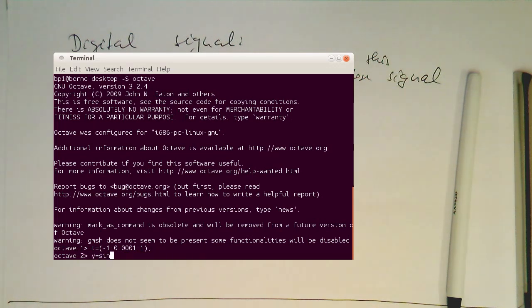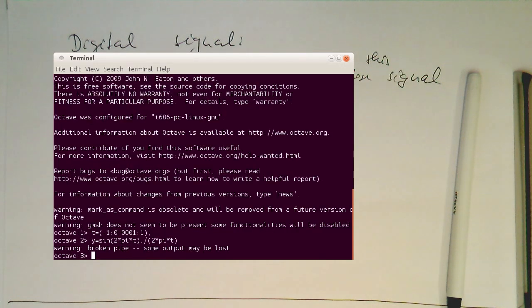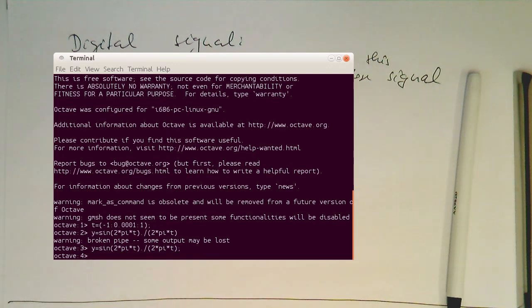And then our function here. 2 multiplied by pi, multiplied by t. And then dot slash divided 2 multiplied by pi, multiplied by t. So if I haven't done any mistakes, then this should calculate something. So because I had omitted the semicolon, we've seen the result. So let's do this like this. And plot this function now.